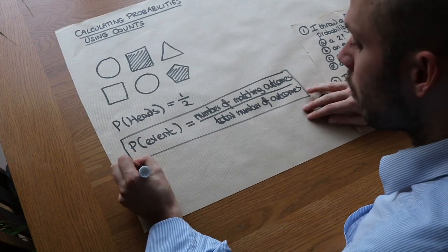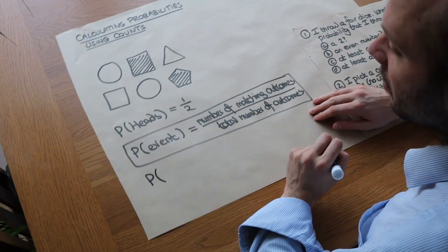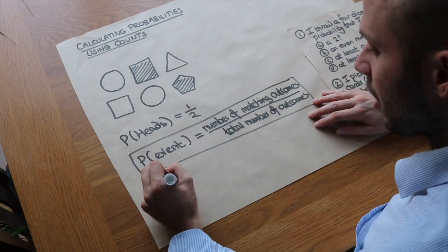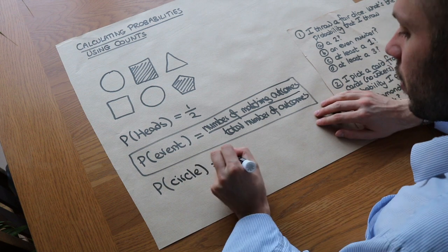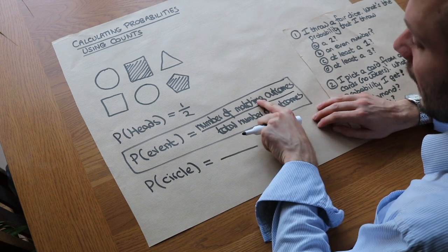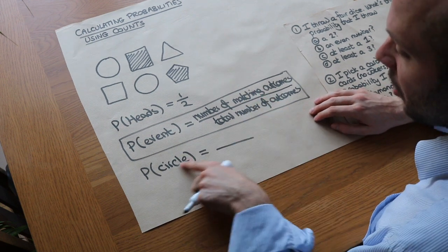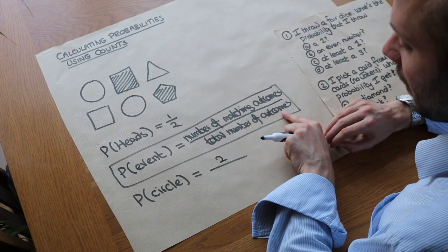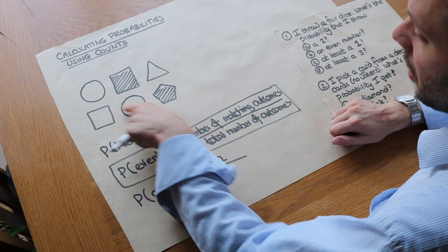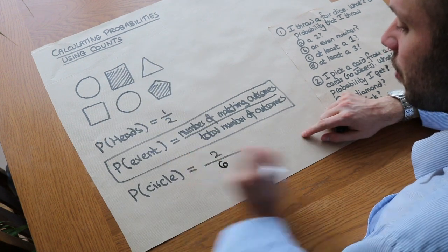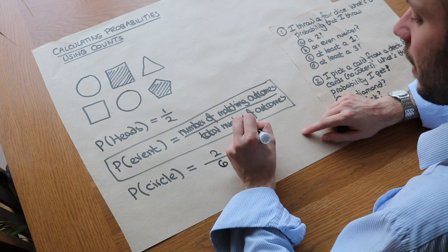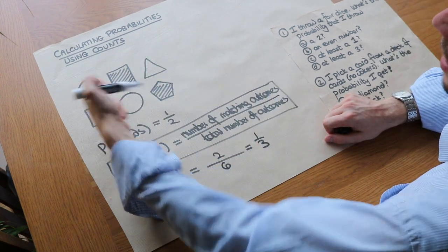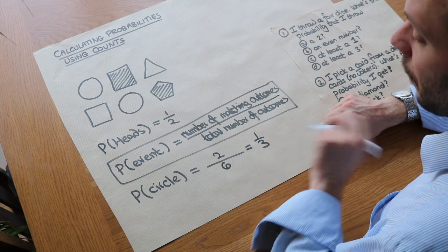Let's consider these shapes here. What would be the probability that when we randomly choose a shape that we see a circle? Well we look at the number of matching outcomes. How many shapes match circle? Well we can see there's two. So we put two divided by the total number of outcomes. Well the total number of shapes we could pick from is six. So it's two out of six and we could always simplify that fraction to a third. So when we pick a random shape we expect to pick a circle a third of the time.